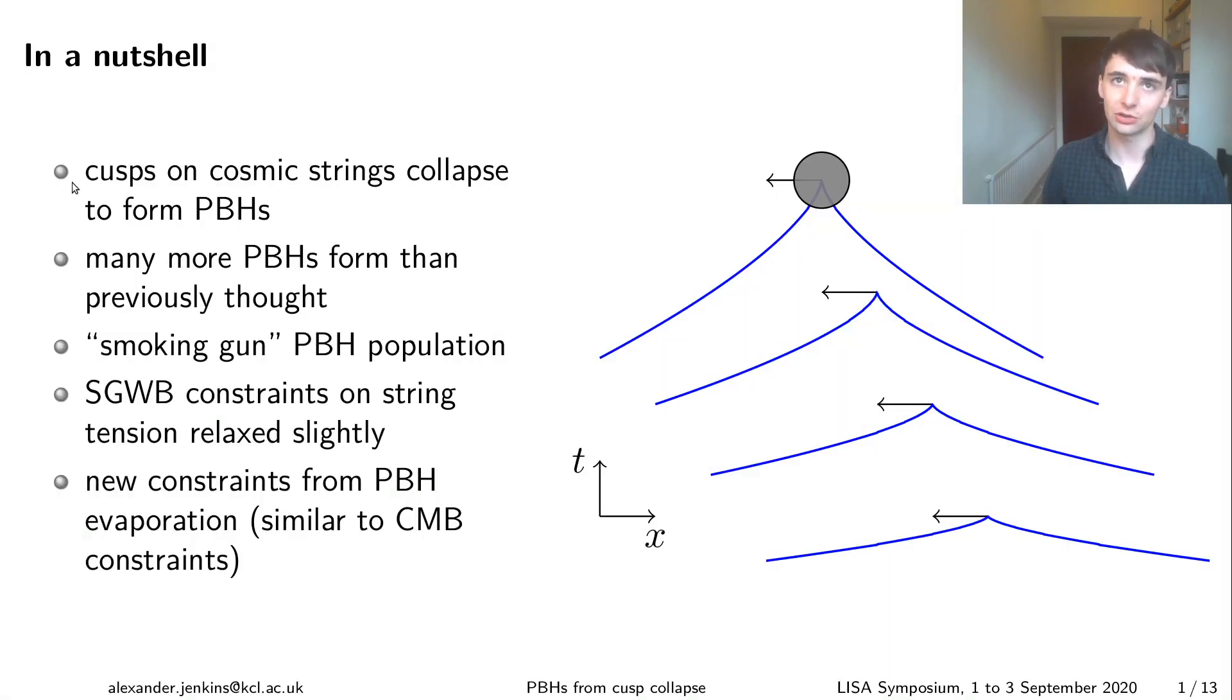So in a nutshell, we show that cusps on cosmic strings can collapse to form primordial black holes. I'll talk a bit in a second about what cosmic strings are and what cusps are. And what this means is that there are many more black holes that are formed from cosmic strings than was previously recognized. These black holes have some interesting properties, which means if we see one of them, it could be a smoking gun signal for this mechanism.